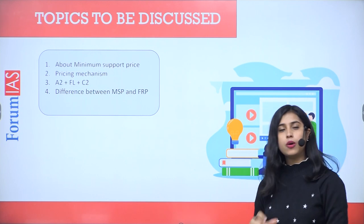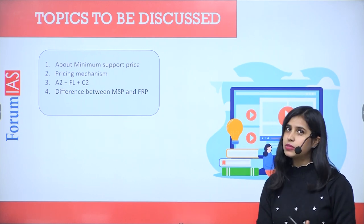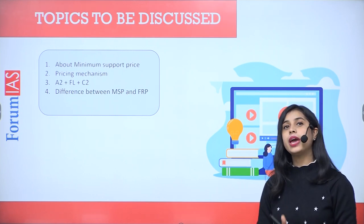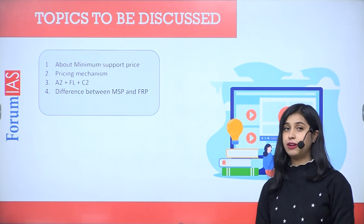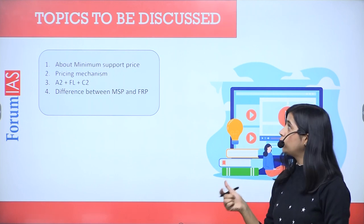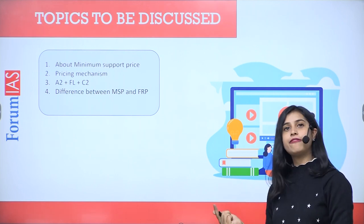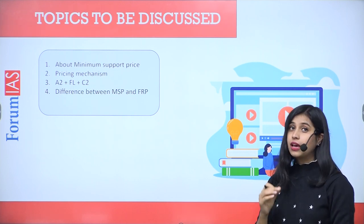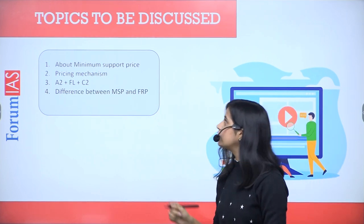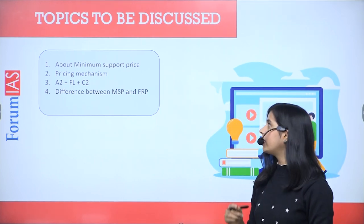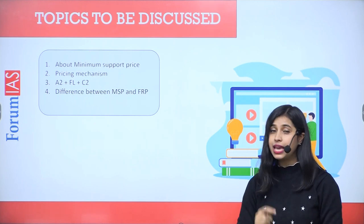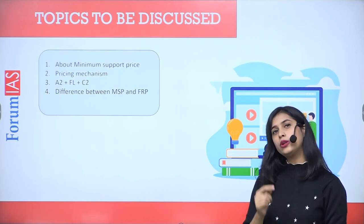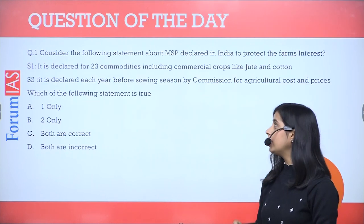We will discuss first of all what is minimum support price, or MSP. Then we will discuss how MSP is calculated. We have different methods available like A2, A2 plus FL, and A2 plus C2. We will discuss all of them. Along with that we will discuss what is fair remunerative price and how FRP is different from MSP.